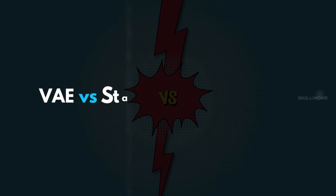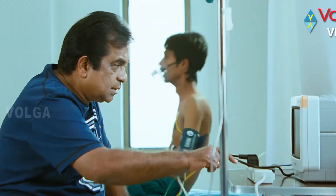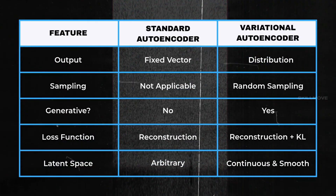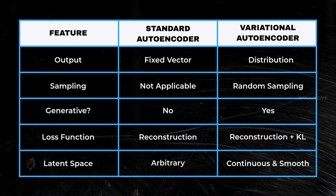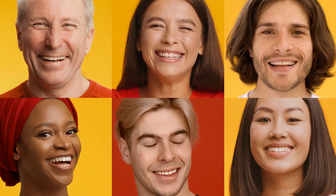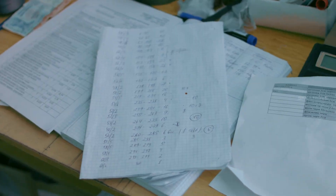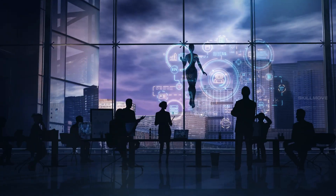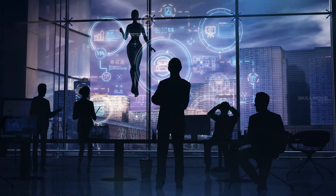Comparing VAE to a standard autoencoder, VAE is the best choice when you want to generate new data — for example, new faces, handwritten digits, synthetic images, and more.